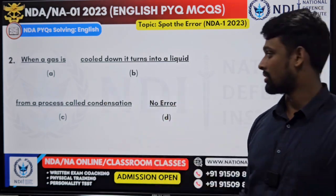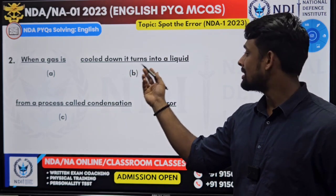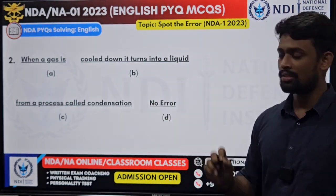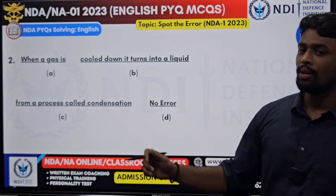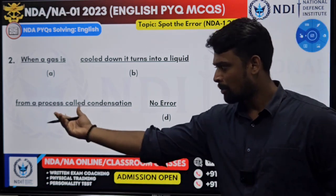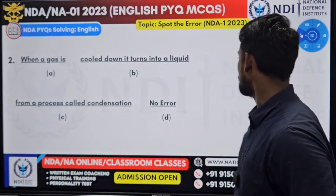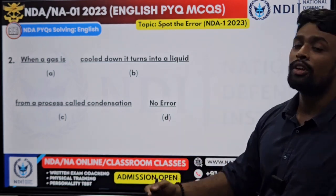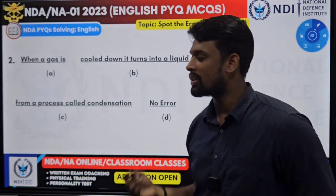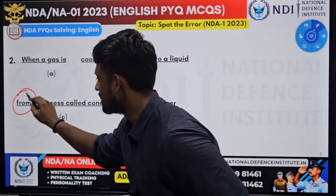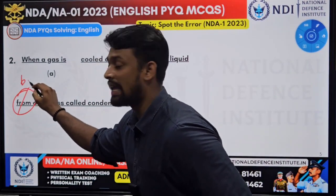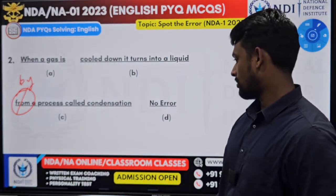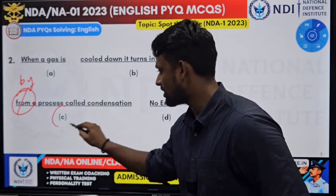Let us move on to the next question. 'When a gas is cooled down, it turns into a liquid from a process called condensation.' Condensation is correct, but is it 'from a process' or 'by a process'? It is 'by a process'. You can easily identify this by studying the question itself. It is not 'from', it is 'by' — again, a prepositional error. Our answer is option C.